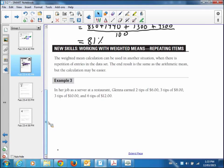Example three. The weighted mean can be used in another situation when there's a repetition of entries in a data set. The end result is the same as the arithmetic mean, but the calculation could be easier. In a job as a server at a restaurant, Glenn earned two tips of $6, three tips of $8, three tips of $10, and six tips of $12. So what's her average mean tip?